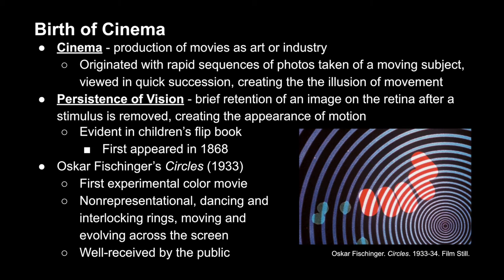That's why flip books work, and children's flip books actually first appeared in 1868. The first experimental color movie happened in 1933 and it didn't have any representational subjects — no humans or anything you could recognize — and the forms just moved and danced across the screen almost like a visual poem, and generally it was well received by the public at the time.